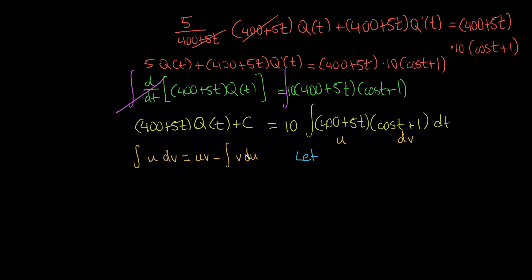So what we're going to do then is we're going to pick a u where the derivative is simple. So derivative of 400 plus 5t, that's pretty simple, it's just a constant. So u equals 400 plus 5t, which tells us that du equals 5dt. Alright, that's great.